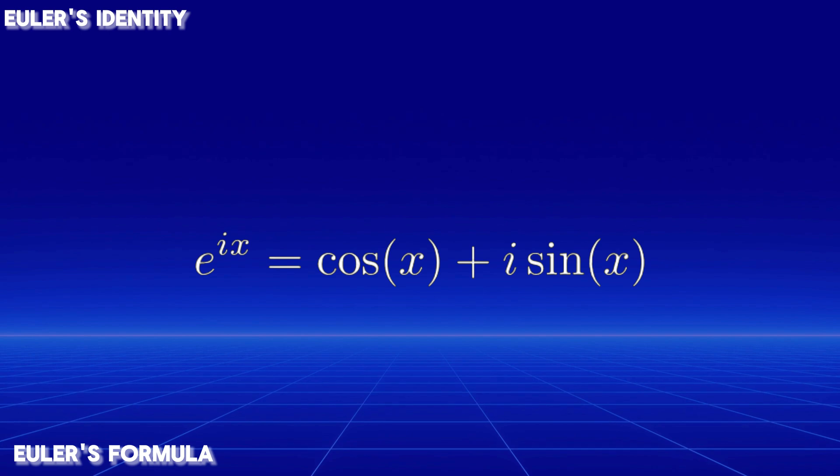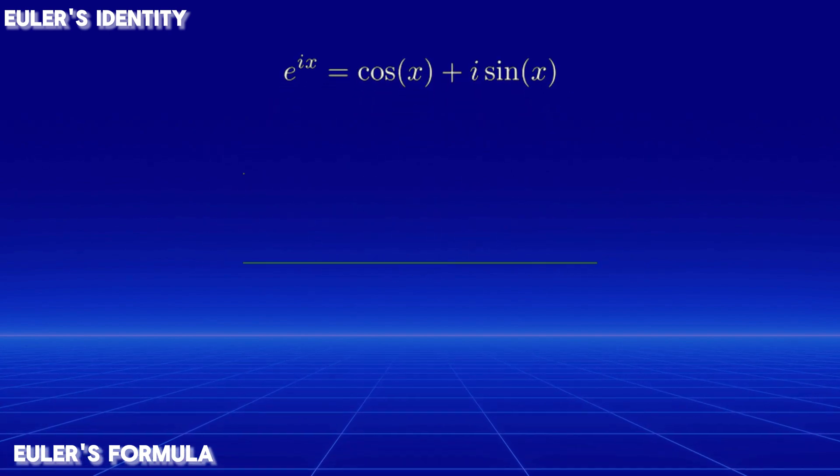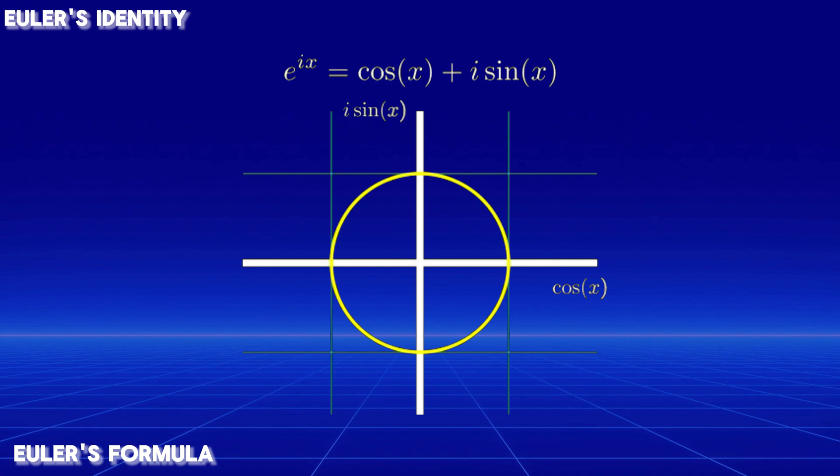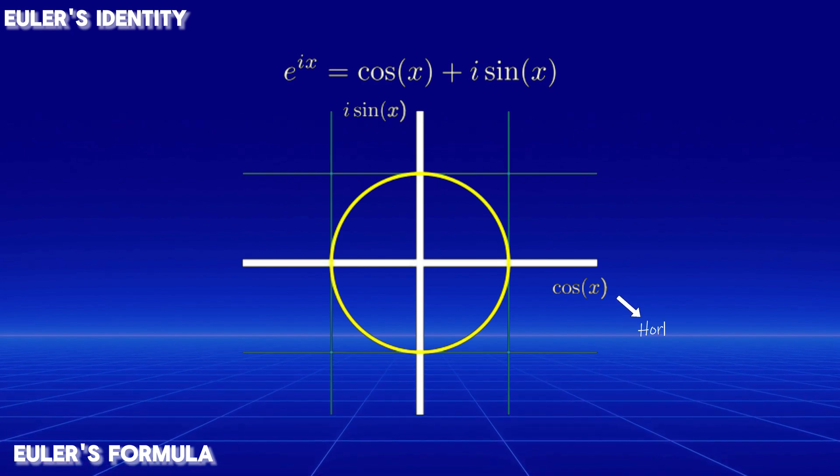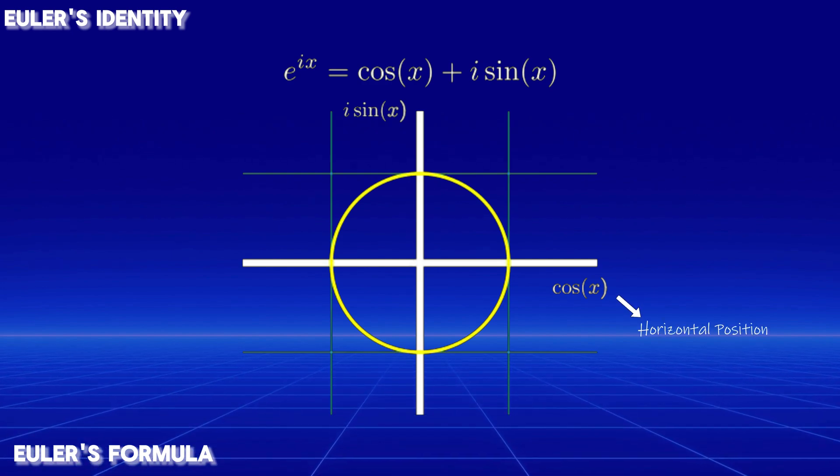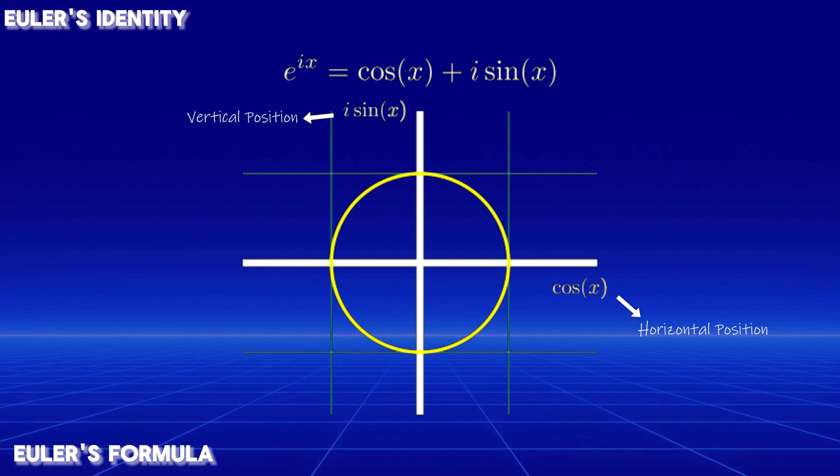Imagine walking in a circle. Your position can be described using two coordinates. Cosine measures how far you are along the horizontal axis, and sine measures your vertical position.